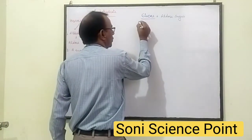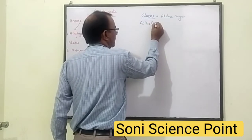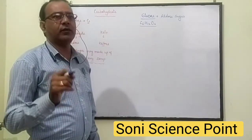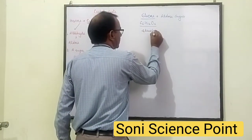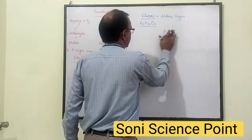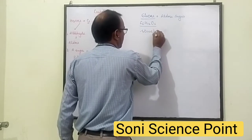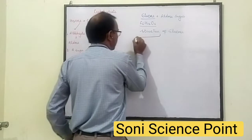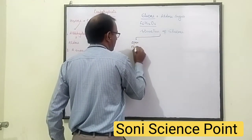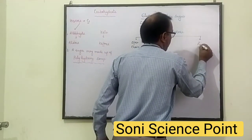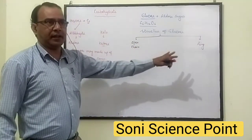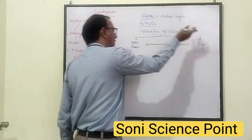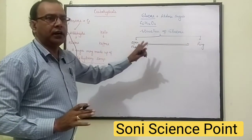The chemical formula of glucose is C6H12O6. Glucose produces two types of structure: one is open chain and the second is ring structure. Both are interconvertible — the open chain converts into a ring, and the ring can convert back into the open chain.